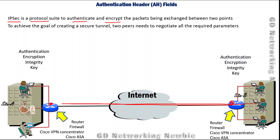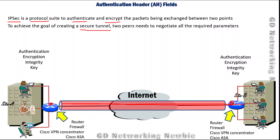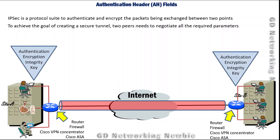IPsec also provides integrity. The actual goal of IPsec is to create a secure tunnel between those two points. To create that secure tunnel, the two points negotiate parameters — for example, what kind of encryption they will use for hiding data, what authentication algorithm they will implement, and how they will exchange the key used for encryption. They exchange these parameters to create a tunnel so that the message can be transmitted securely.